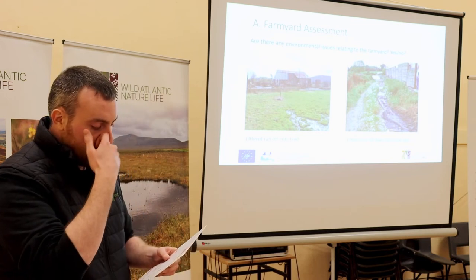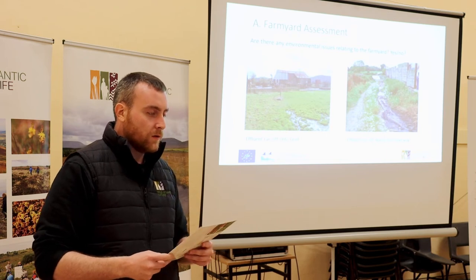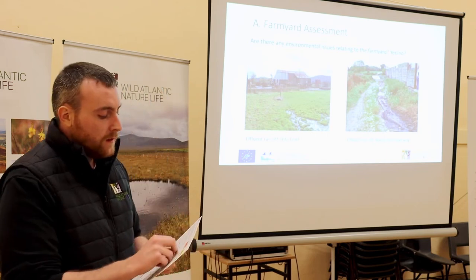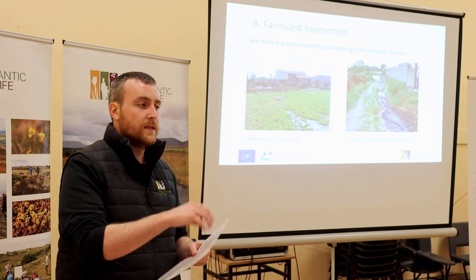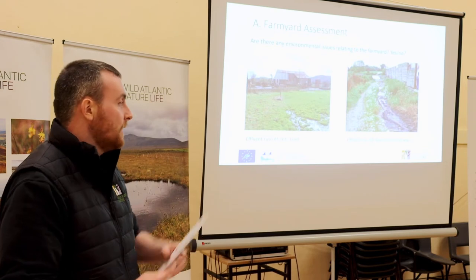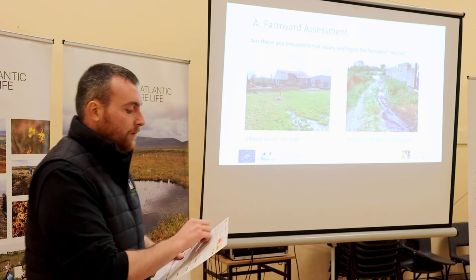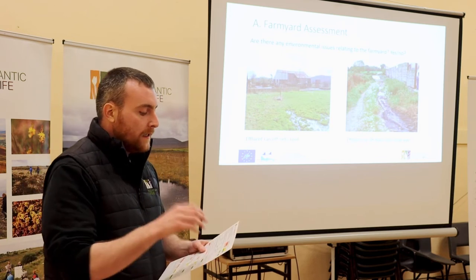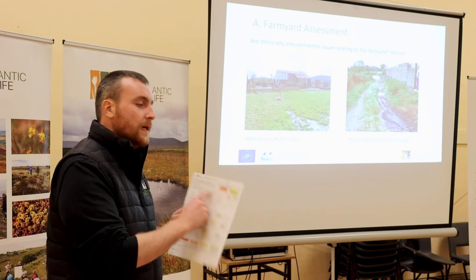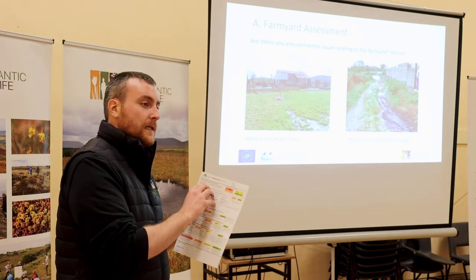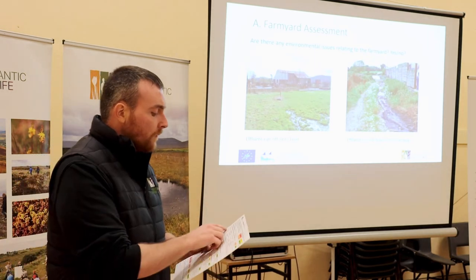The first section is the farmyard assessment - section A: do any of the following items present a risk to a watercourse? For this one, the farm advisor would walk around your farm buildings, your sheds, slatted sheds, where you store your animals, where you store your bales - looking for anything that presents a risk of pollution to a watercourse.